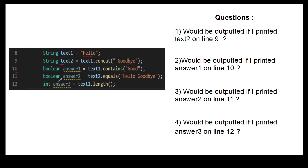For question three, if you output answer2 on line 11, what would you get? We're checking whether text2 equals "hello goodbye". Text2 is a concatenation of text1 and "goodbye", so it would be "hello goodbye". However, the h in text2 is lowercase and the h in the comparison string is uppercase, so that results in false. If this were equalsIgnoreCase, the result would be true, but because it's just equals, answer2 is false. For the last question, what would be output if we print answer3 on line 12? The length method returns an integer — the length of text1 which is "hello" — that's five characters, so answer3 is five.